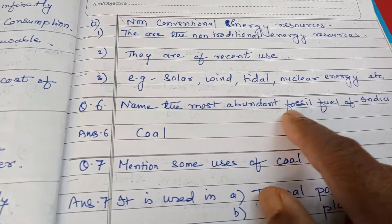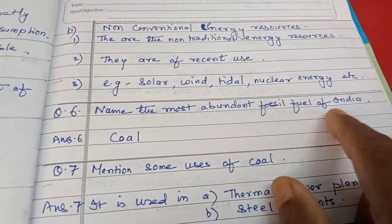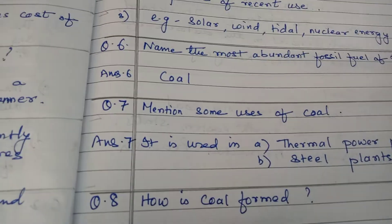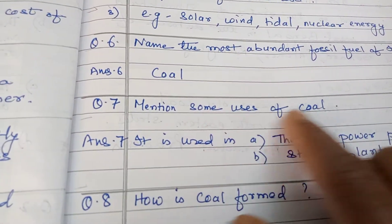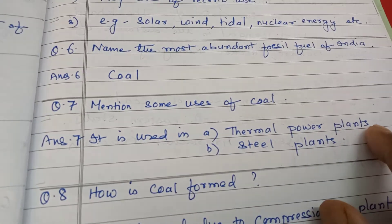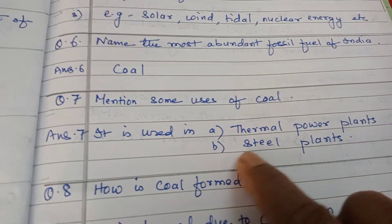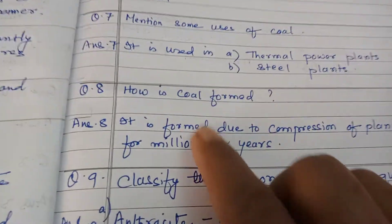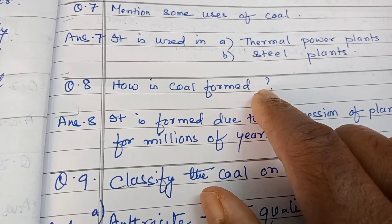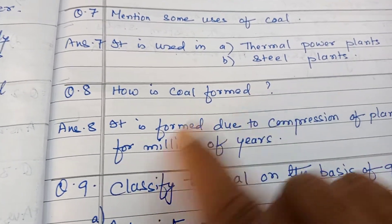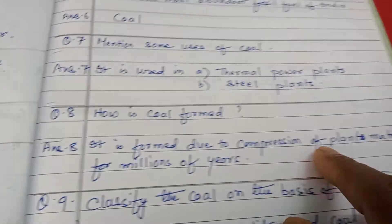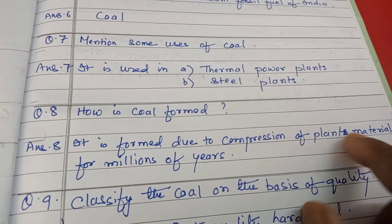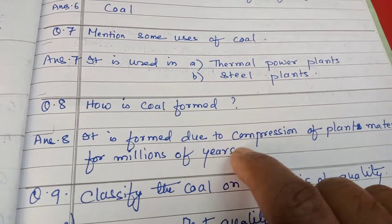The most abundant fossil fuel of India is coal. Some uses of coal: it is used in thermal power plants and in steel plants. Coal is formed due to the compression of plant materials for millions of years.